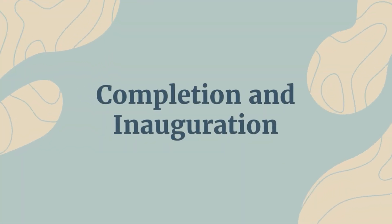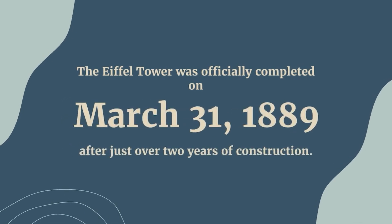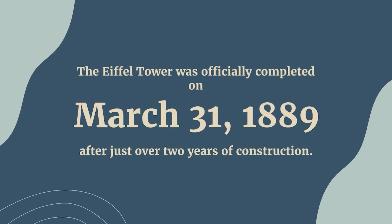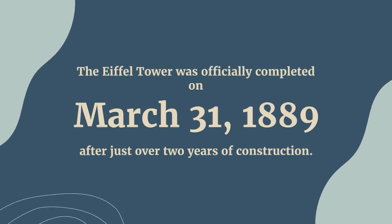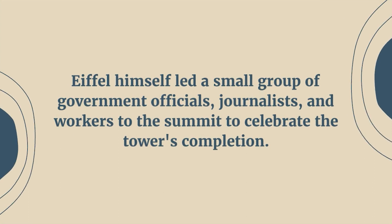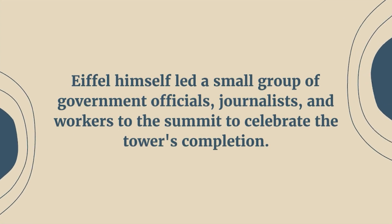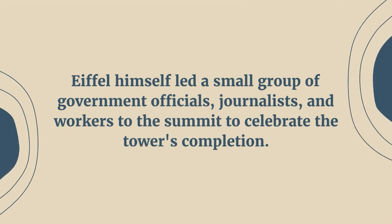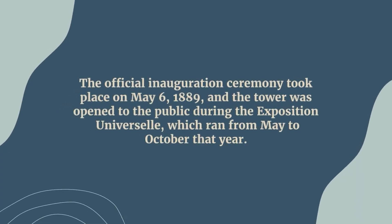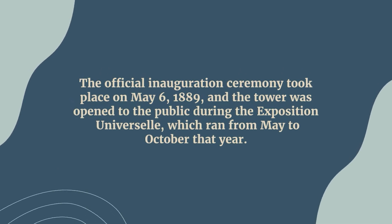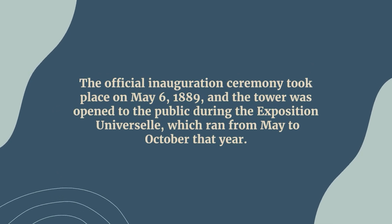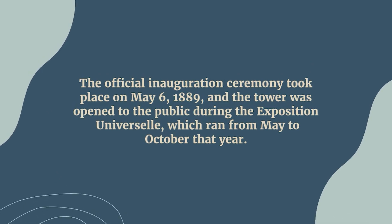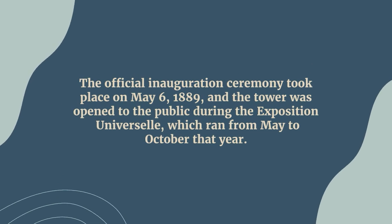Completion and inauguration: The Eiffel Tower was officially completed on March 31, 1889. After just over two years of construction, Eiffel himself led a small group of government officials, journalists, and workers to the summit to celebrate the tower's completion. The official inauguration ceremony took place on May 6, 1889, and the tower was opened to the public during the Exposition Universelle, which ran from May to October that year.